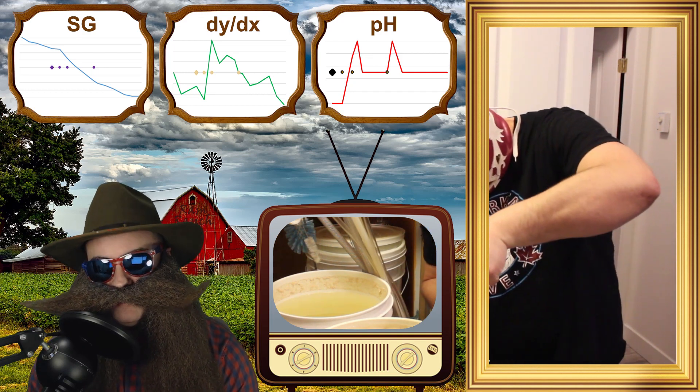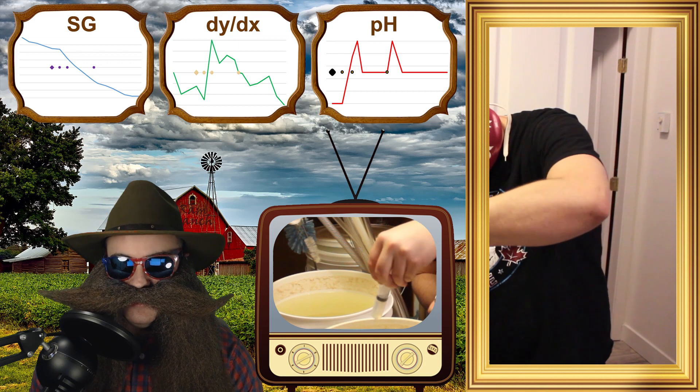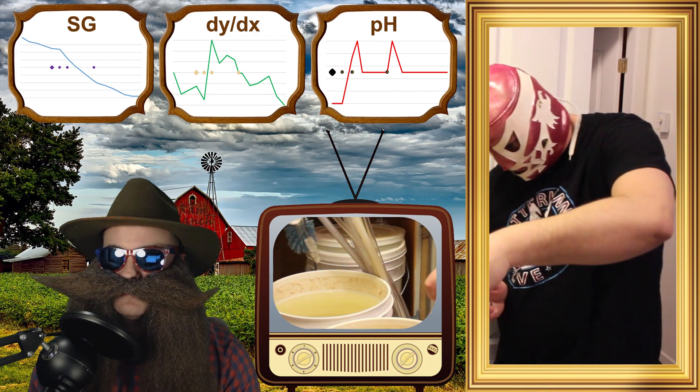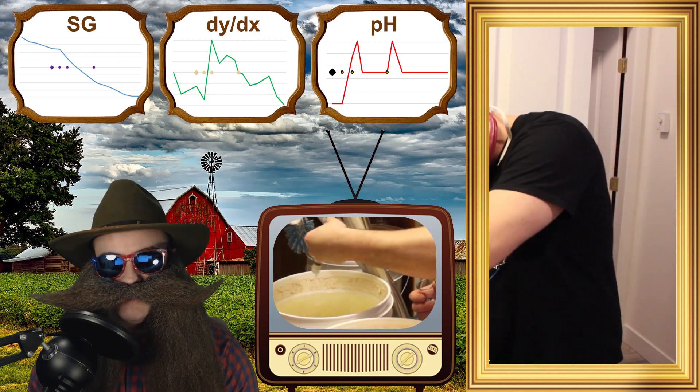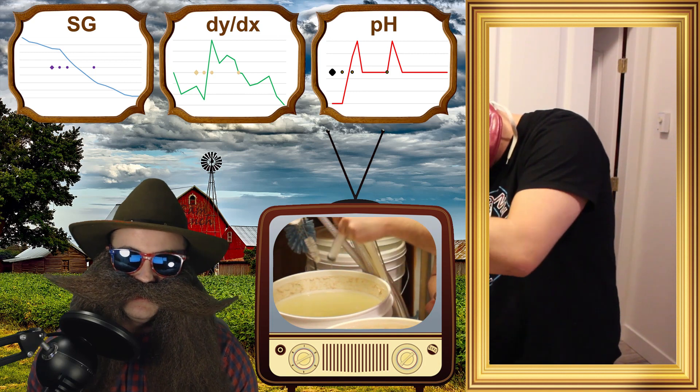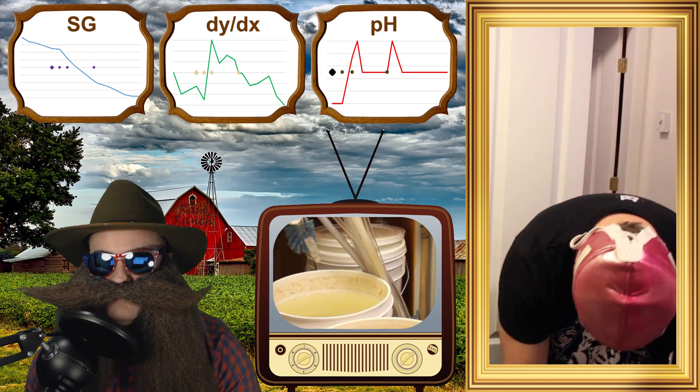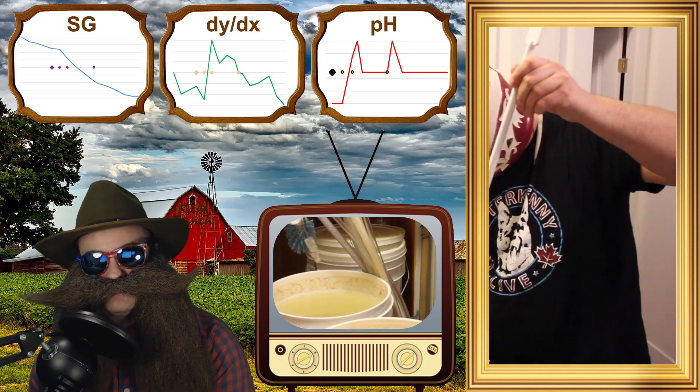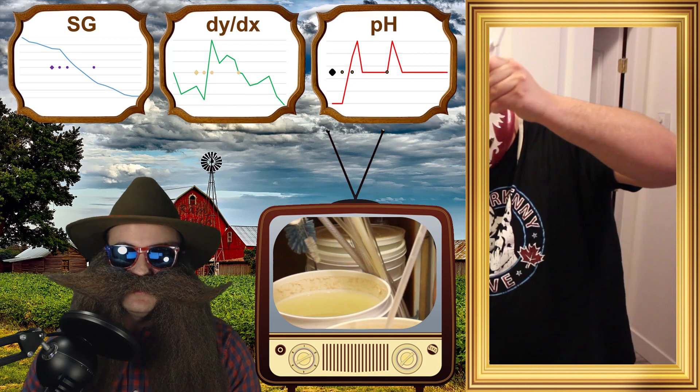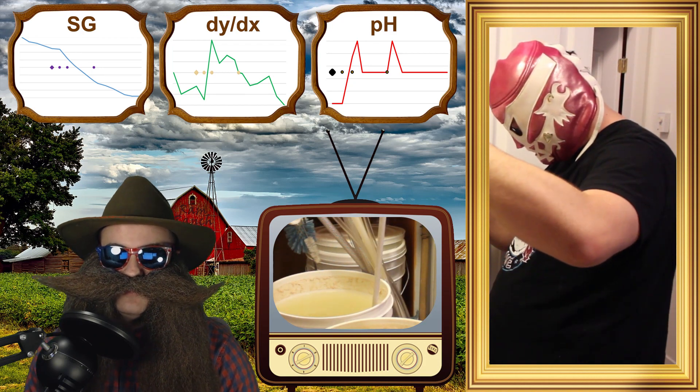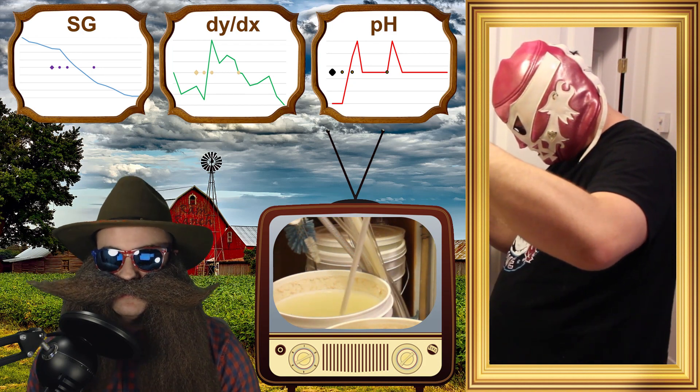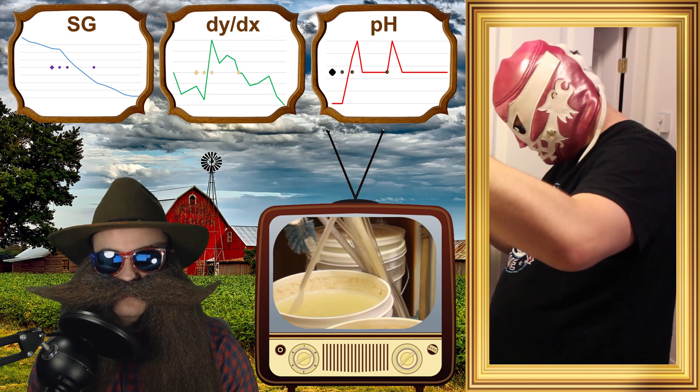I'm using about 10 ml of Kieselsol and about 40 ml of Chitosan per 6 gallon batch. I put in 10 ml of Kieselsol and gently stir it without disturbing the yeast cake on the bottom of the fermenter. As per the instructions on the bottle, Nacho Libre waited an hour before gently stirring in the 40 ml of Chitosan.